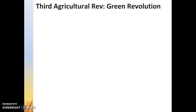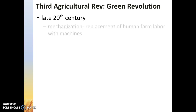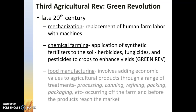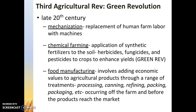Let's talk about the third agricultural revolution, sometimes called the green revolution. It happened in the late 20th century — around 1960 to 1970 — when people started looking for solutions to world hunger. The keys are threefold: mechanization, chemical farming, and food manufacturing. This is about MDCs improving crop yields, but also MDCs trying to improve crop yields in LDCs by carrying these ideas to them in order to improve crop output and hopefully decrease death rates, starvation rates, and famine rates in LDCs.